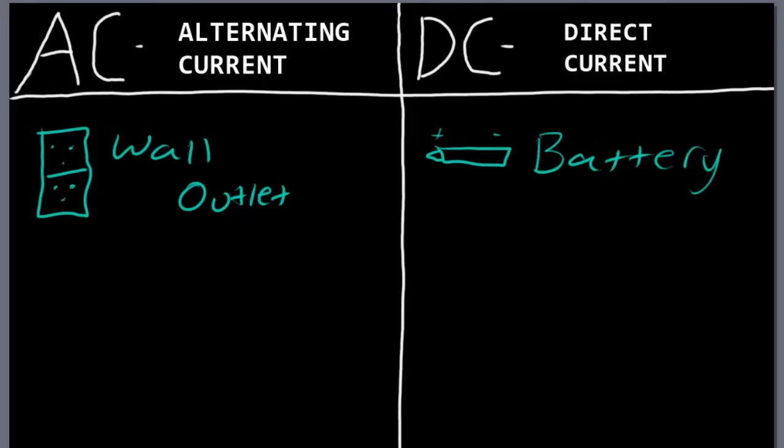Now I'm sure some of you just stopped right there and said, wait a second, I plug my phone into the wall outlet every night to charge it. Well, you just said that a wall outlet gives off alternating current, but my phone runs on direct current. So what's the problem there? Well, that brings me to my next point.